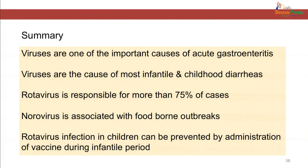To summarize: viruses are one of the most important causes of acute gastroenteritis and the most important cause of infantile and childhood diarrhea. Rotavirus is responsible for more than 75 percent of the cases of diarrhea in children. Norovirus is also associated with foodborne outbreaks. Rotavirus infection in children can be prevented by administration of vaccine during the infantile period. Thank you.